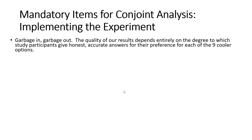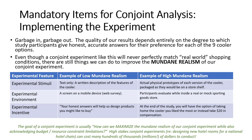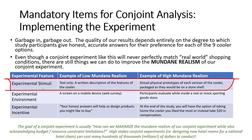The quality of the results we derive from this experiment is entirely contingent on the degree to which the respondent gives an honest, accurate answer to all of their preferences for each of the nine cooler options. There's no way that a conjoint experiment will be perfectly mapped onto a real-world purchase scenario. However, there are a variety of things we can do to increase the mundane realism of our experiment. Mundane realism simply means making design decisions to make the experiment more realistic or more consistent with the real world. For example, an example of low mundane realism would be to provide only a written description of the features of the cooler, leaving it entirely up to the respondent to imagine the context. An example of high mundane realism would be actual physical prototypes of each version of the cooler packaged as they would be on a store shelf, where people could handle, hold, touch, look at, and inspect the real cooler — much more consistent with shopping in a sporting goods store.